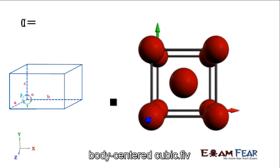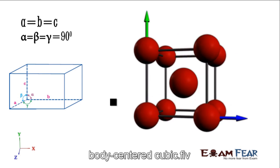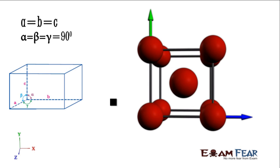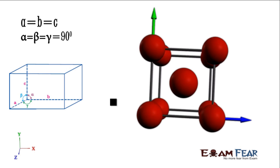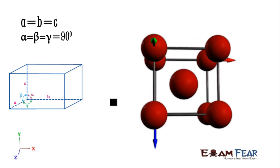The next example is the body centered cube. Again the sides are equal and all the angles are equal, but there is one atom in the body of the cube. Everything is same but in the body there is one atom.